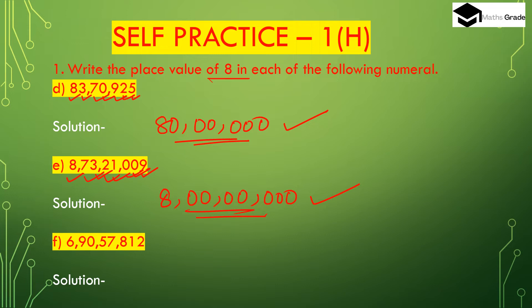Now part (f): 6 crore 90 lakhs 57,812. The digit 8 is in the hundreds place. So the place value of 8 is 800. To summarize: in 83,70,925 it is 80 lakhs; in 8 crore 73 lakhs 21,009 it is 8 crore; and in 6 crore 90 lakhs 57,812 it is 800.